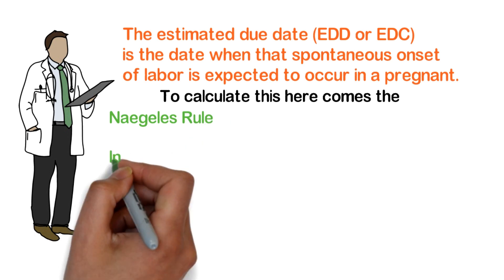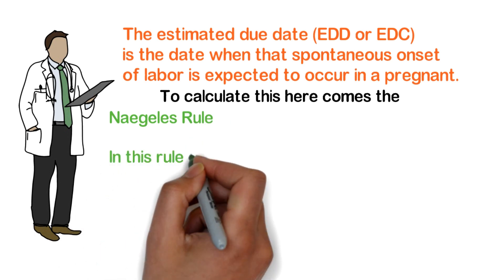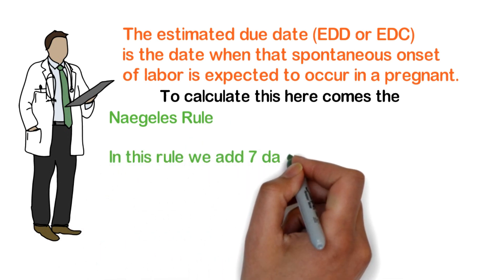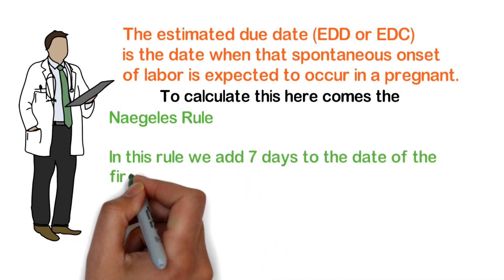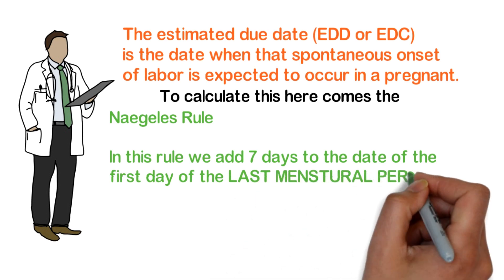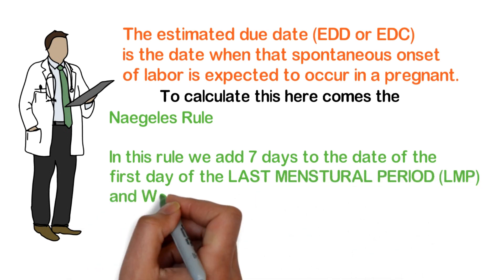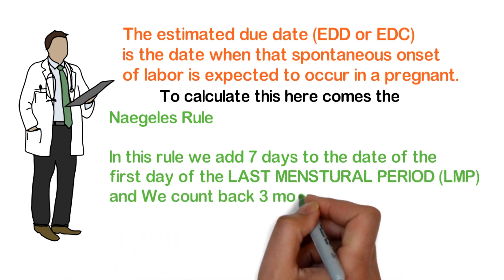Naegele's rule states that we add 7 days to the date of the first day of the last menstrual period, and we count back 3 months.